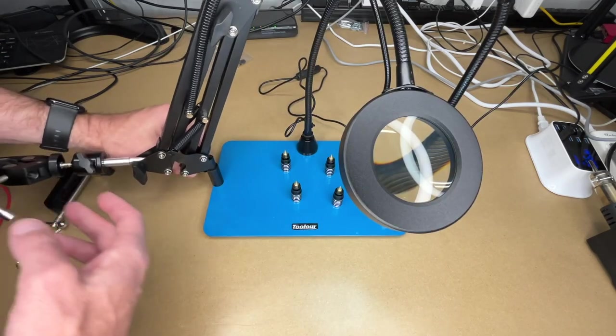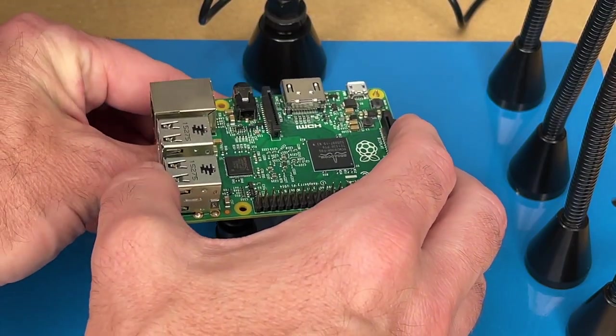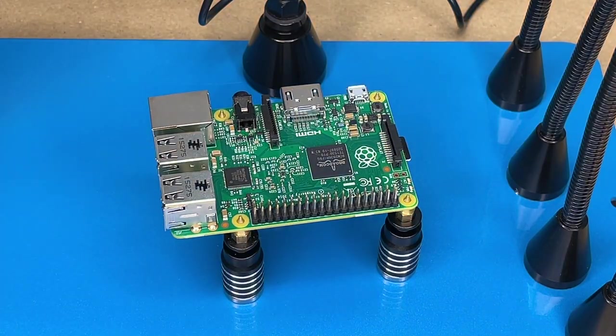So let me show some of these accessories here. Let's take a look at the standoffs. Here I have a Raspberry Pi computer. We can line up these with the mounting holes, like so. And we're holding it like that.